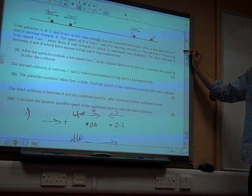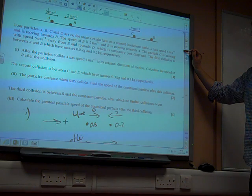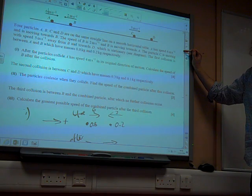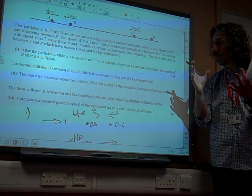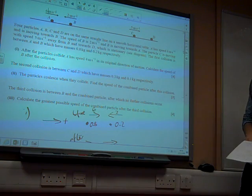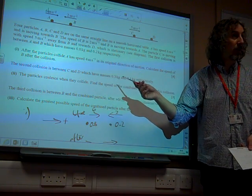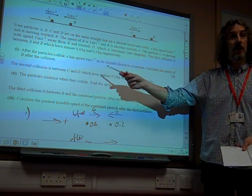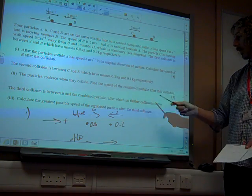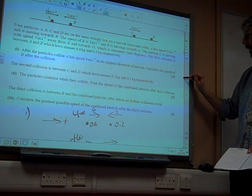We've got 6 out of that. We're then thinking, what happens next? The second collision is between C and D, which have masses 0.3 and 0.1. The particles coalesce when they collide. Coalesce means they join together, merge, become one particle. Find the speed of the combined particle. They've even told us what coalesce means because they've told us they coalesce and then we get a combined particle after this collision.